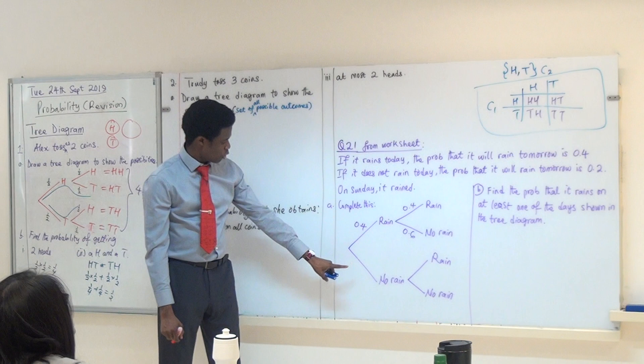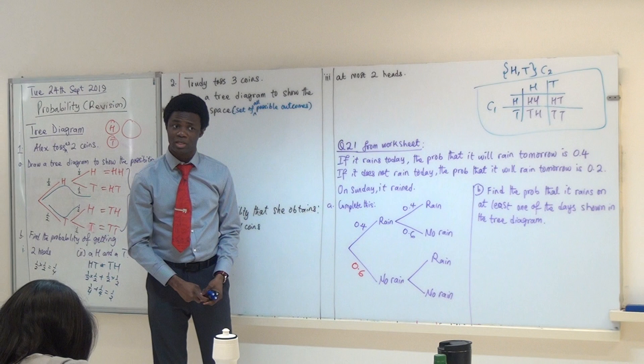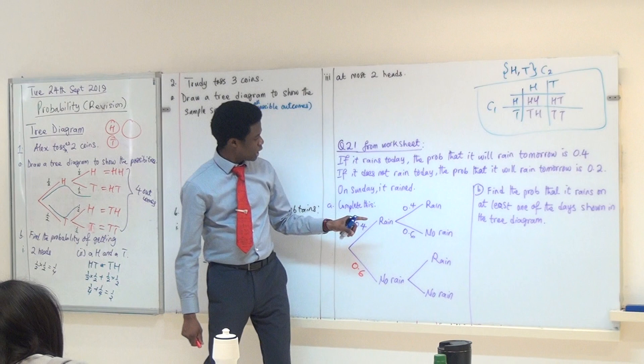So, what would this be? 0.6. Who doesn't understand why it's 0.6? Speak now. Jerry? Understand? Okay. So, 0.4, 0.6. Right? Good.